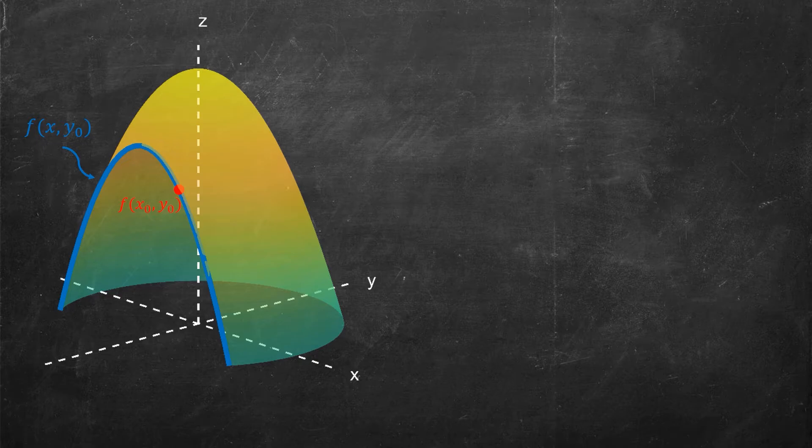So what I have done here is I've taken a two-dimensional function f(x, y). I have specified that the y value is fixed to be y₀. And what I've got out of this is a one-dimensional function, the output only now depends on x.